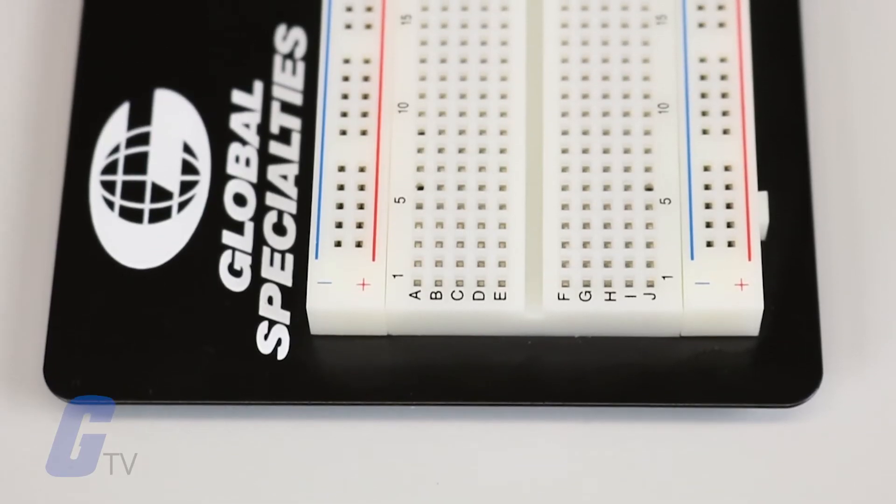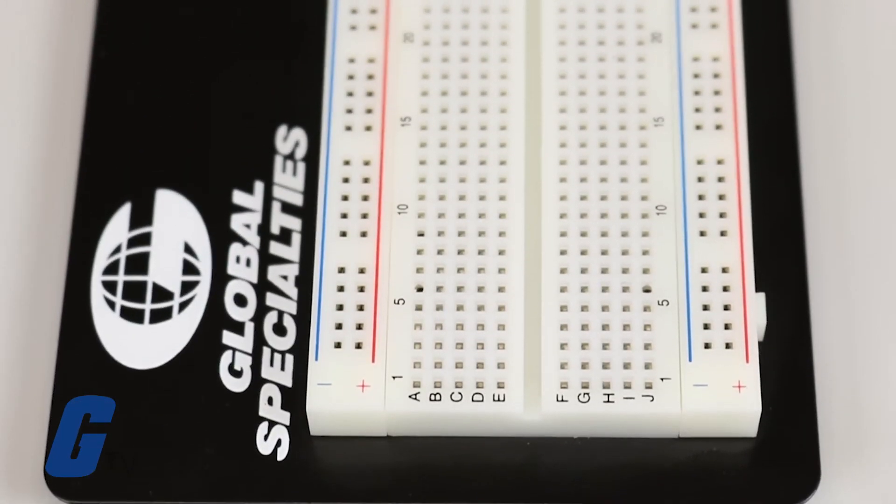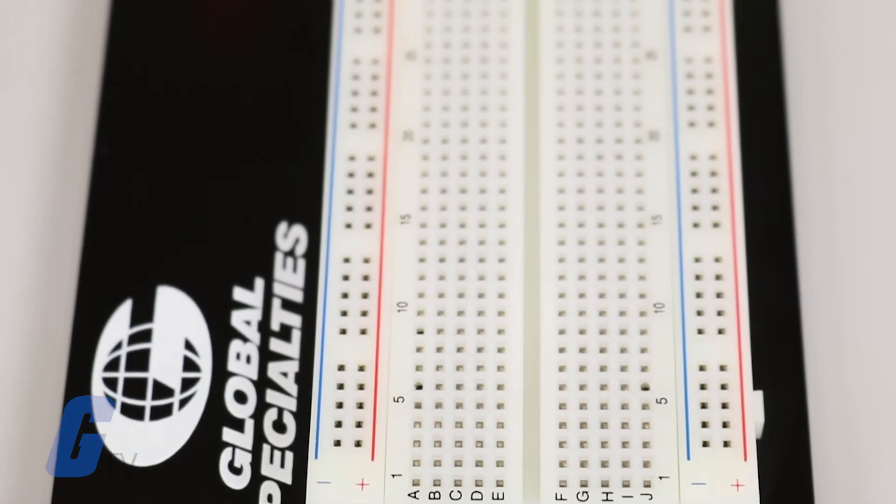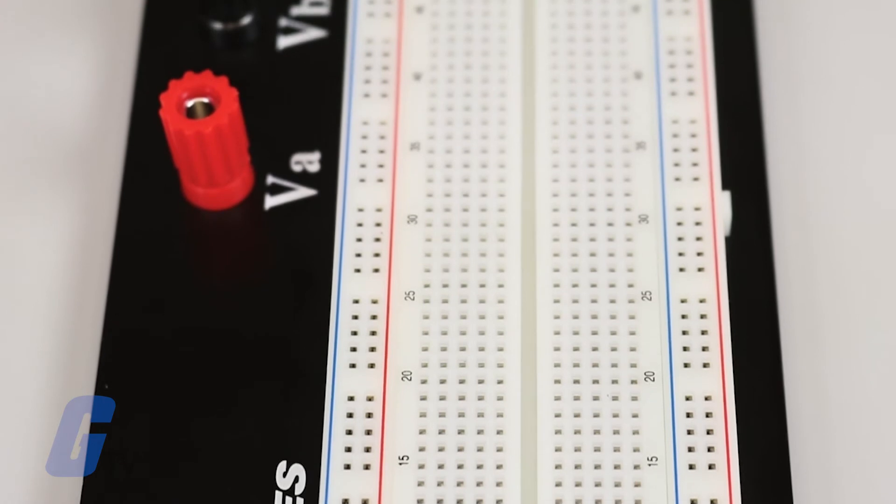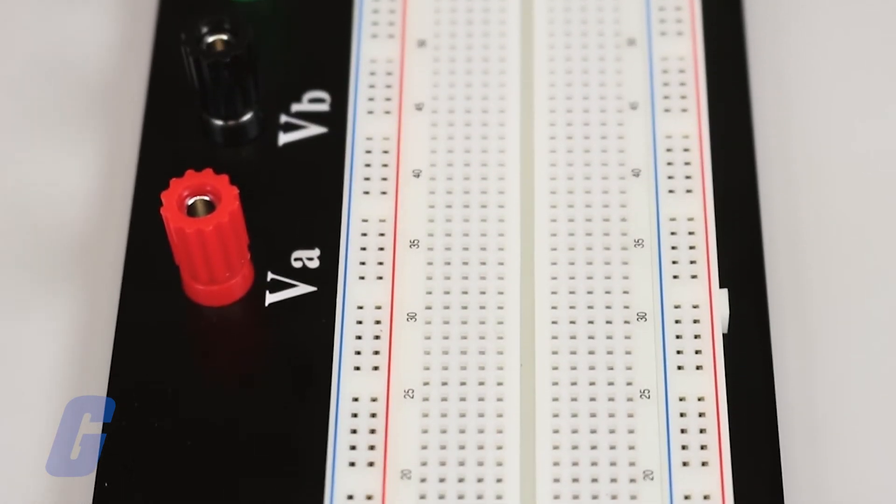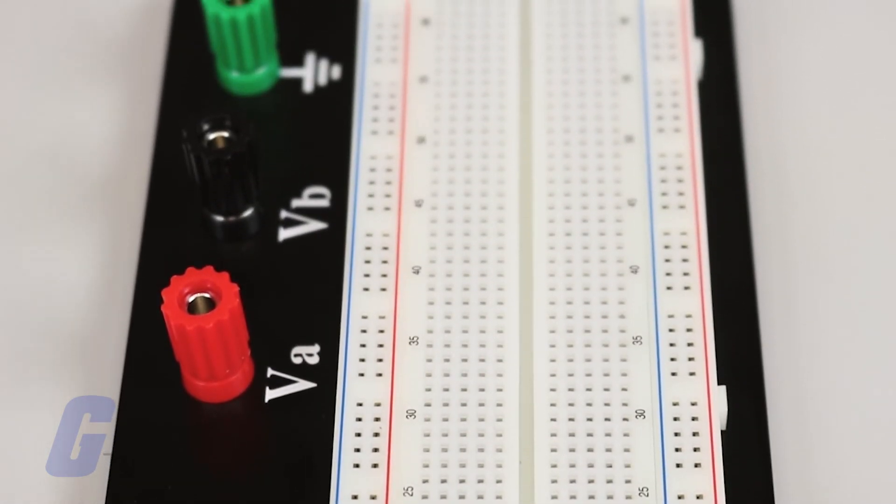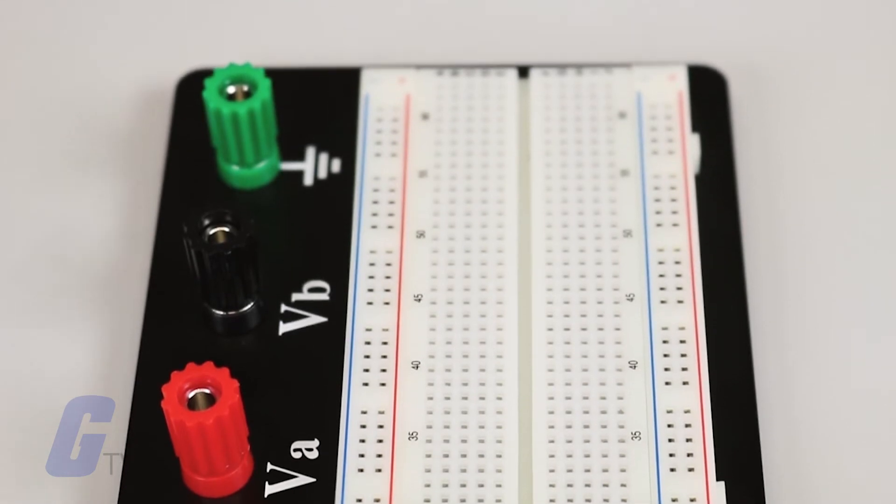You may also hear the term power bus or rails used to refer to both of the buses together rather than just the positive one. Technically there are no physical differences between the different buses. The labels just make them easier to organize your circuit.